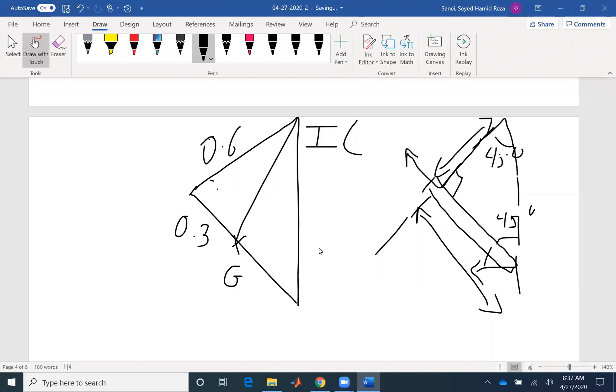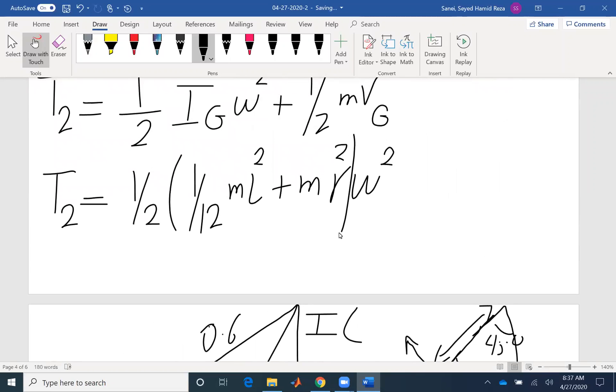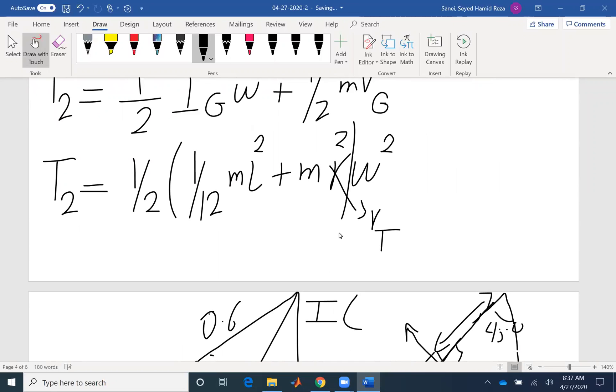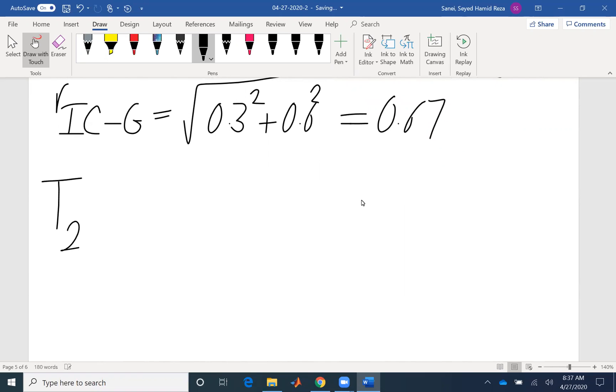So now I can find R_ICG. R_ICG would be the square root of 0.3 squared plus 0.6 squared, so that would be 0.67. In my equation, R is actually R_ICG from instantaneous center of zero velocity to center of gravity. Now to find R, I have everything except omega. So let's write our equation T2. I'm factoring half omega squared, 1/12, M is 15, 0.6 squared plus M again. Also R would be 0.67 squared.